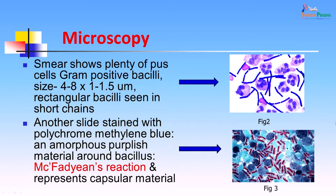Another slide was stained with polychrome methylene blue. It showed an amorphous purplish material around the bacteria. This is known as the McFadyean reaction and represents the capsular material around the bacteria. When you stain the bacteria with polychrome methylene blue, you get this purplish material around the bacteria.